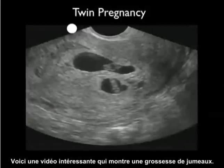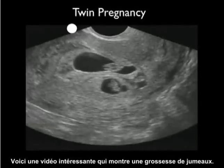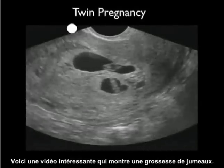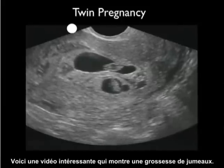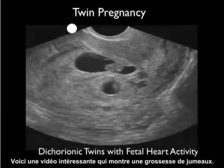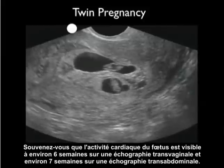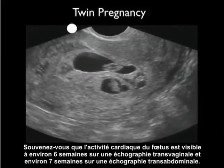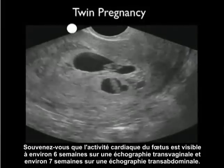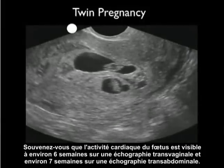Here's an interesting video clip showing a twin pregnancy. What we see here are two gestational sacs signifying dichorionic twins, and within each of the gestational sacs we can see little fetal poles with a flicker of heartbeats. Recall that fetal heart activity is seen at about 6 weeks on transvaginal sonography and about 7 weeks on transabdominal sonography.